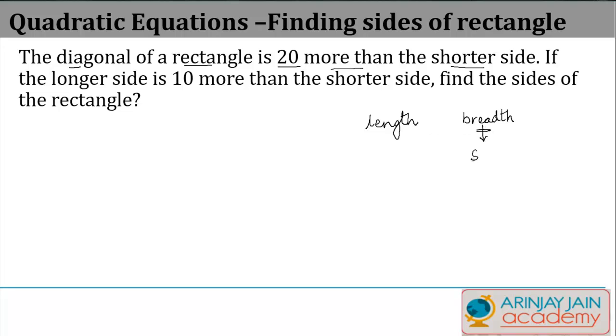The diagonal of a rectangle is written as the square root of the sum of length squared plus breadth squared. The diagonal is 20 more than the shorter side.